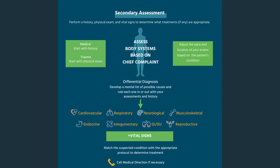Here's our secondary assessment. The sentence to describe it: perform a history, physical exam, and vital signs to determine what treatments, if any, are appropriate. There used to be a strict split between medical and trauma patient assessment, and we still do things a little differently for those patients. The medical patient generally — we get more information from the history unless they're unresponsive. For trauma, the hands-on physical exam gives us the information: if we feel broken bones, find bleeding, bruising, or a problem in the chest or belly, the physical exam makes the difference.